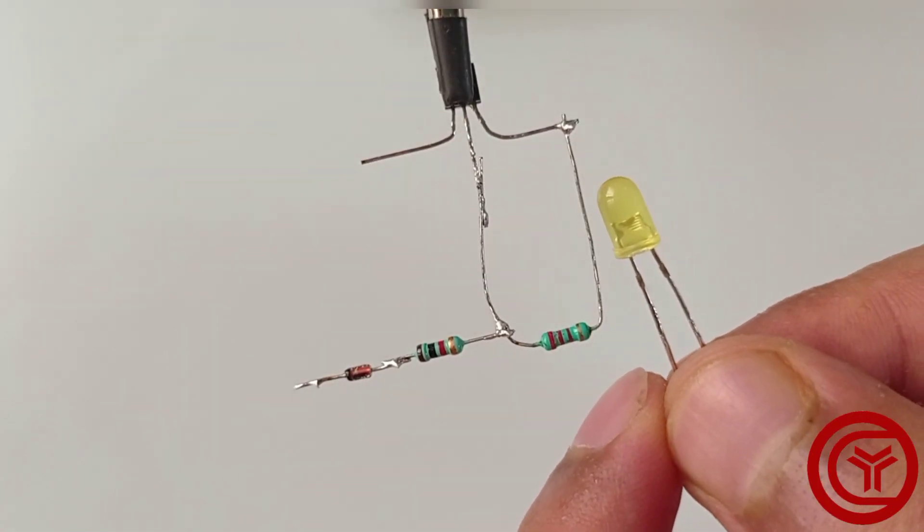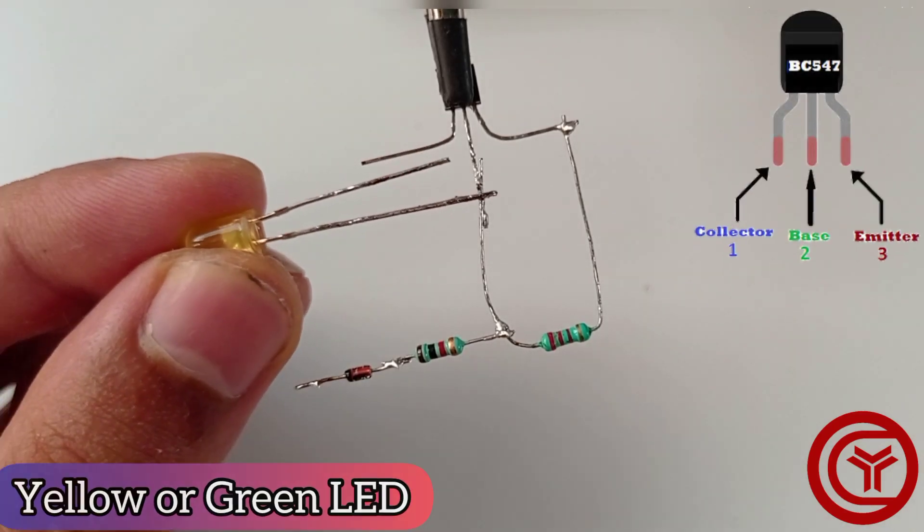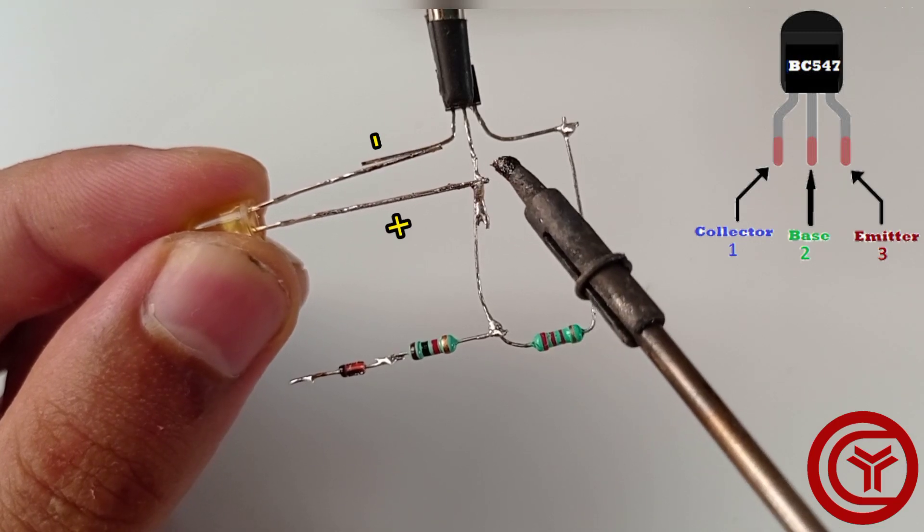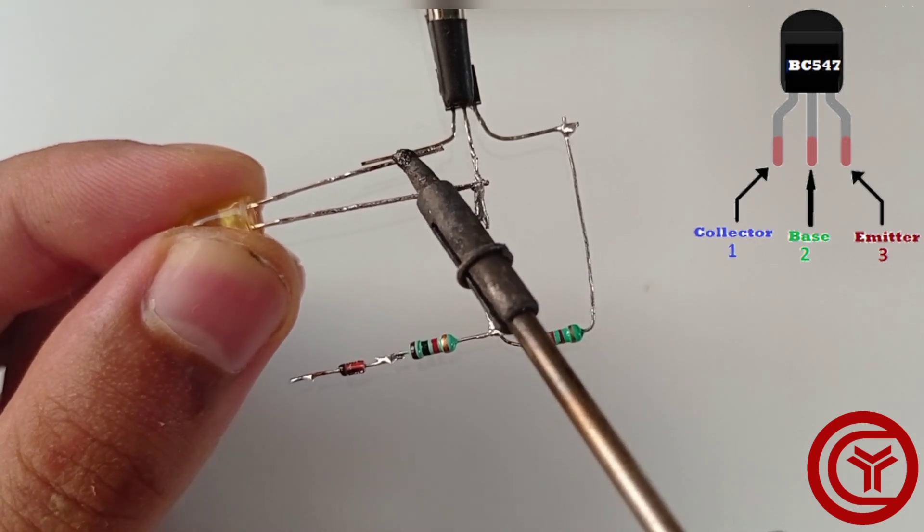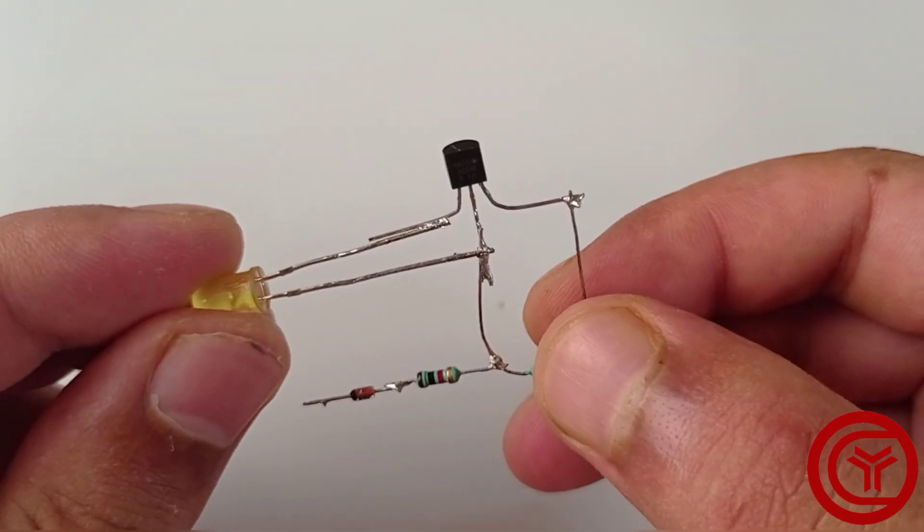Now we take yellow or green LED. Solder positive with base of transistor and negative with collector of transistor. Our circuit is almost complete.